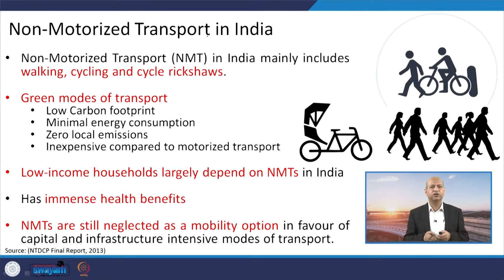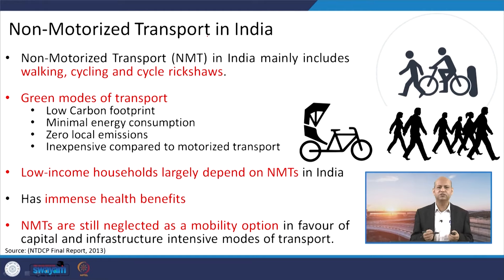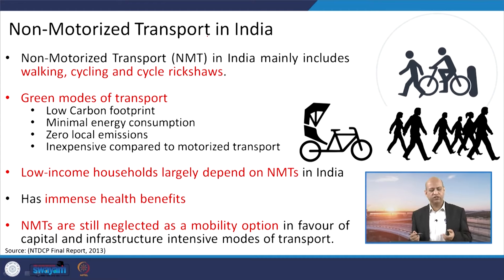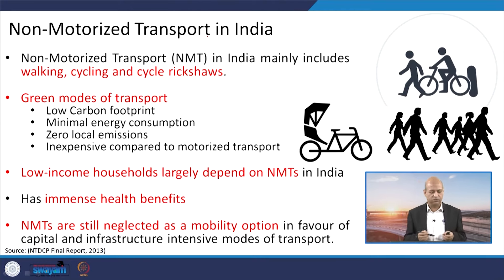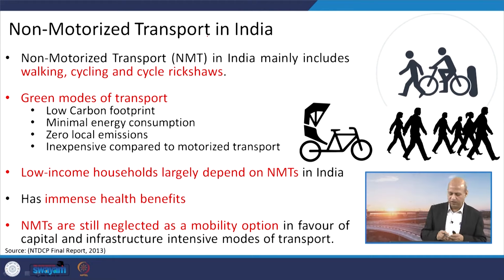Non-motorized transport is a wonderful example being given a lot of importance in new urban planning, because it helps save resources and ensures improved air quality. If we can have more walking or cycling tracks, people may feel motivated to use them. Unfortunately, we do not have proper dedicated footpaths — many people walk on the road, which is very dangerous.